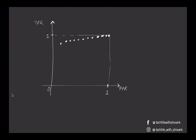Up to a certain point, as we increase the threshold, the decrease in True Positive Rate is not much but the decrease in False Positive Rate is huge. But after this point, the decrease in True Positive Rate increases dramatically while the decrease in False Positive Rate is relatively low. So the threshold at that inflection point is what we choose for our logistic regression model.